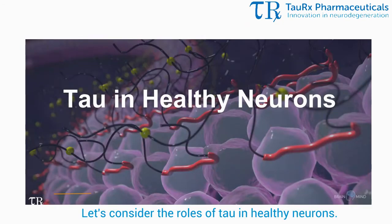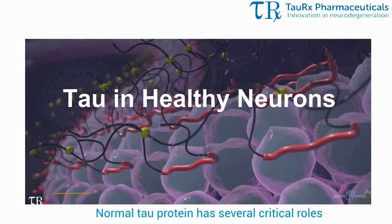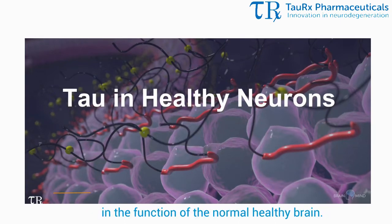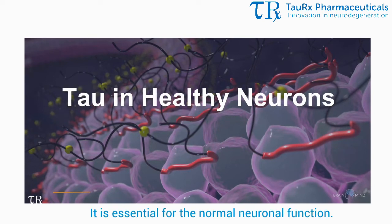Let's consider the roles of tau in healthy neurons. Normal tau protein has several critical roles in the function of the normal healthy brain. It is essential for normal neuronal function.